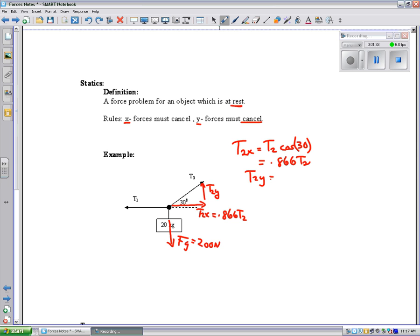T2y is equal to T2 sine 30. Sine of 30 is 0.5, so T2y ends up being 0.5 T2. And I can put that over here, 0.5 T2.